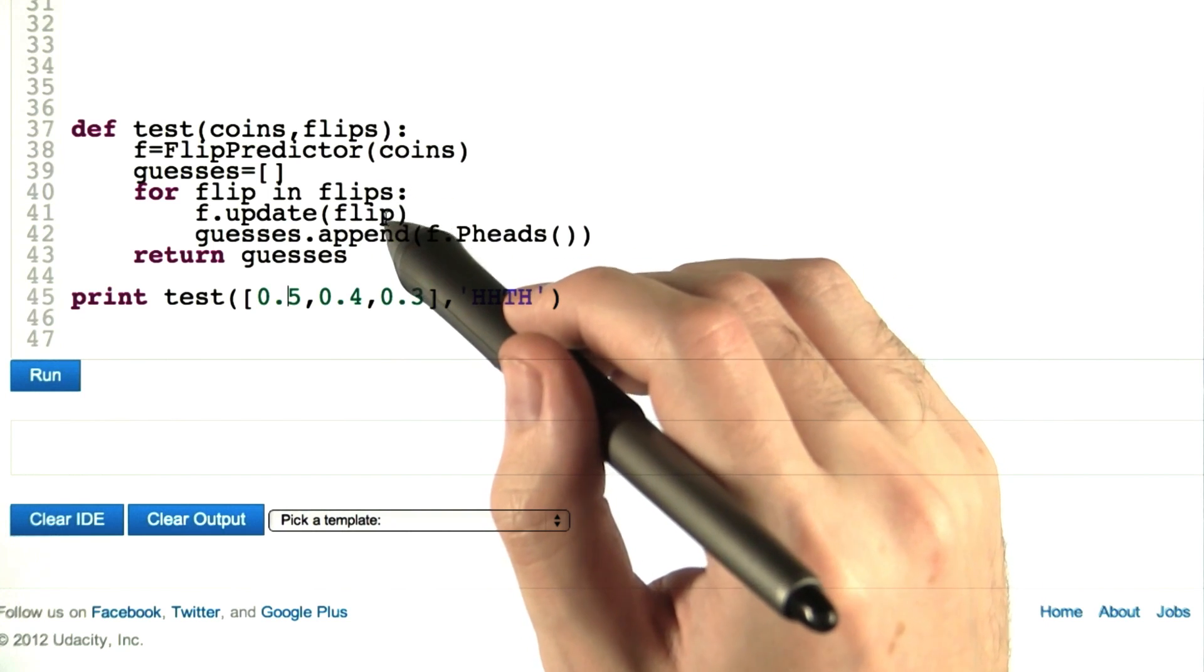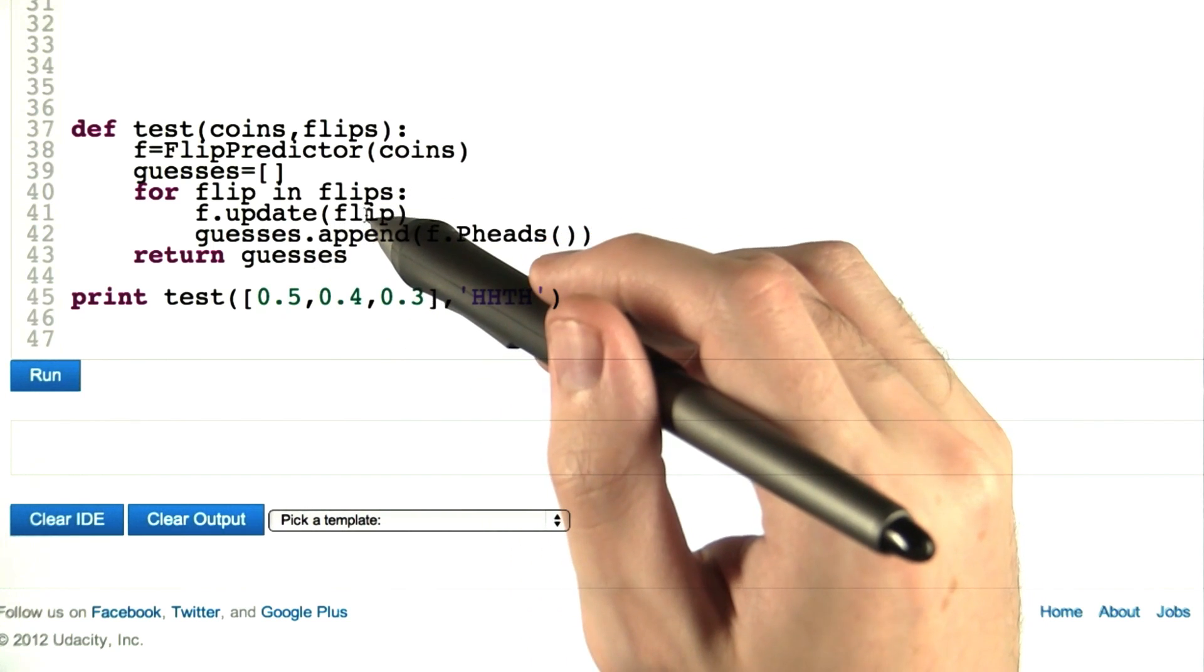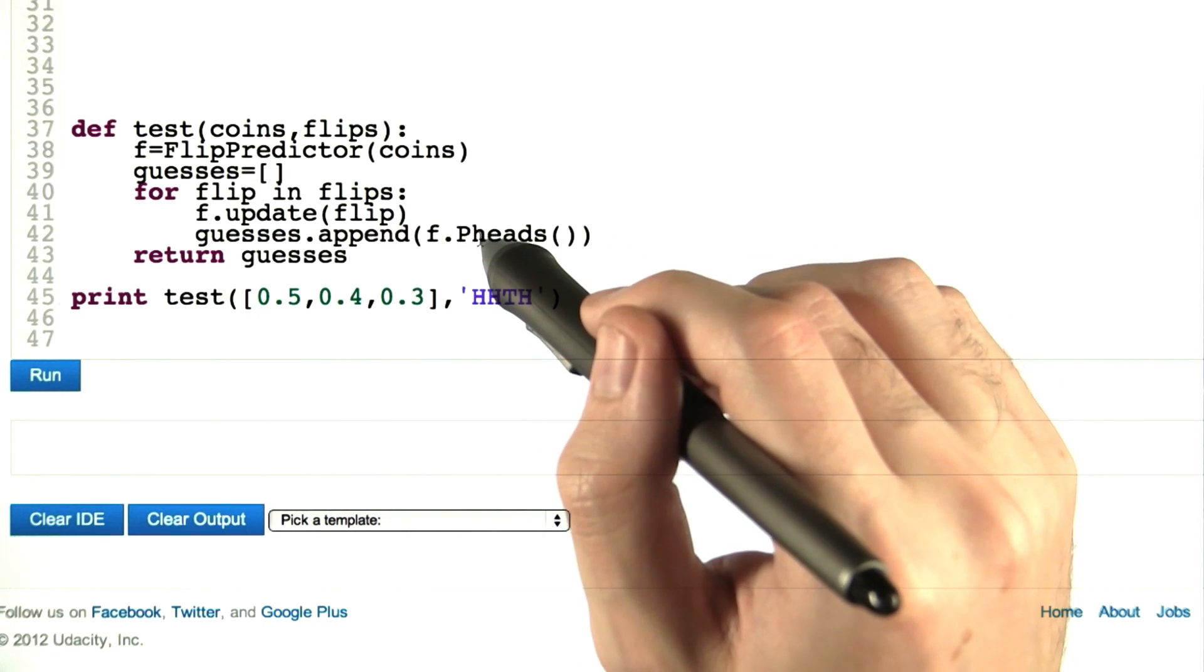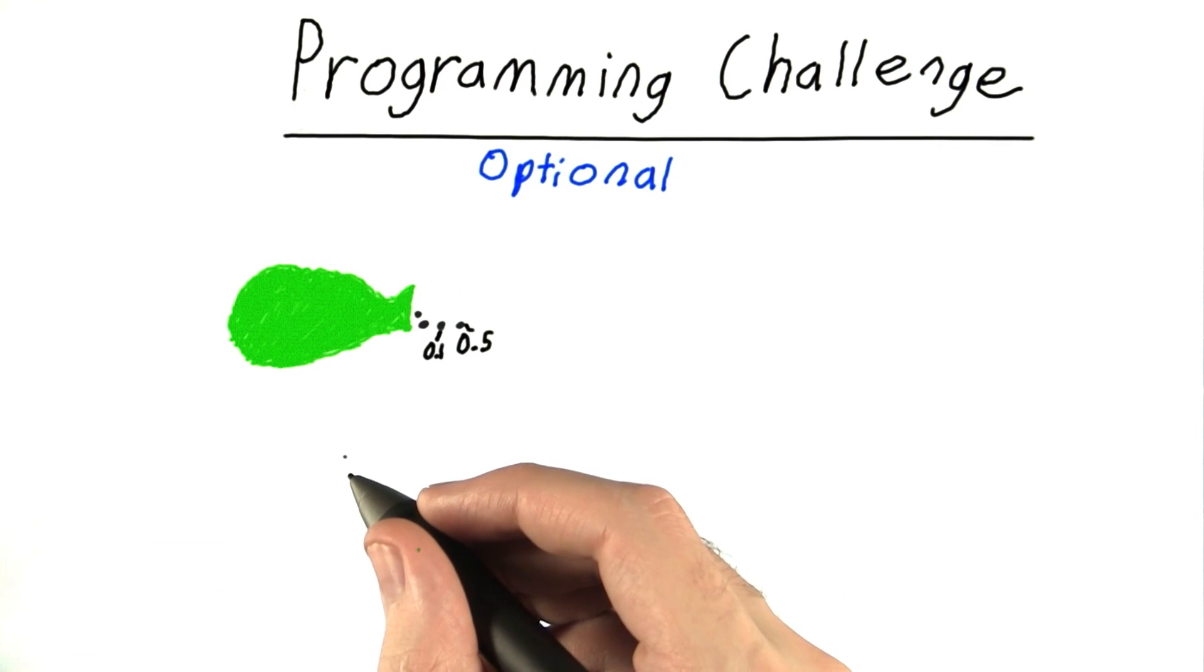After every flip, we'll tell you what the result was. And then we'll ask you to tell us what the probability of heads will be the next time we flip the coin.